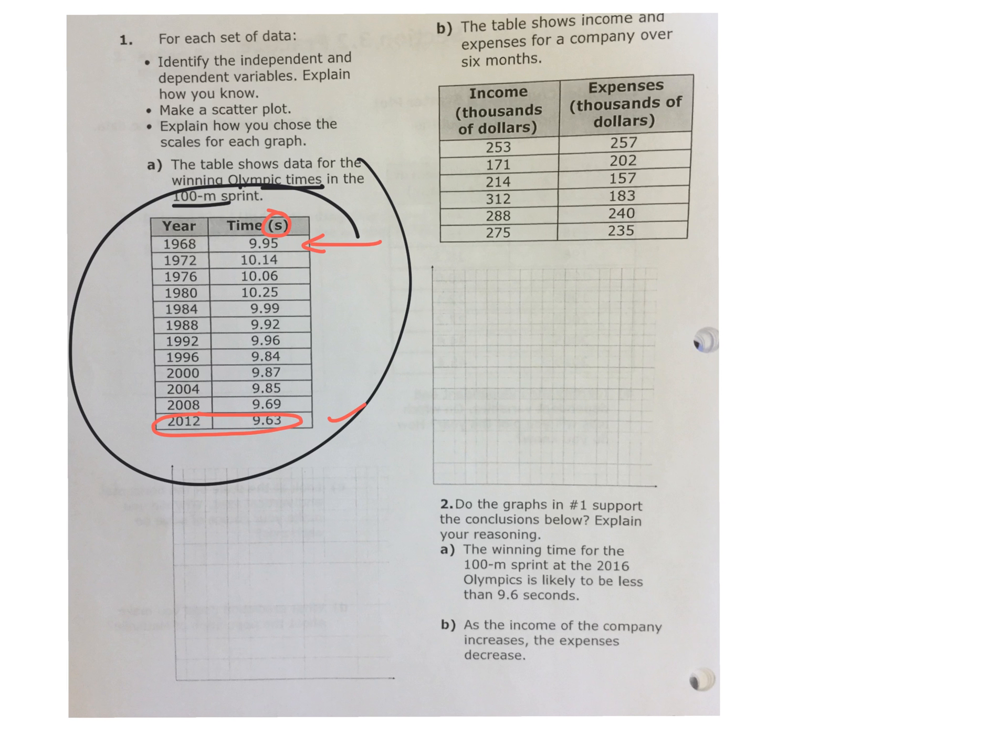In 1968, the record was 9.95 seconds. And then what happened in the next Olympics? Did they beat the record? No. Did they beat the record in 76? In 1980, did they beat the record? No. Did they beat the record in 1984? No. Did they beat the record in 1988? Yeah, so it took them from 1968 to 1988 to have the record beaten. And then in 2012, it was the fastest time.